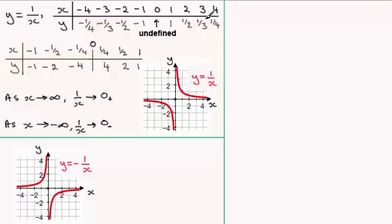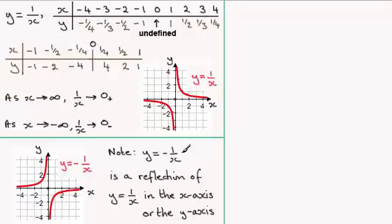I'll leave it up to you to check this out. Just draw yourself up a table, something like this, and plot the points and you'll see that you'll get a graph looking like this. And I hope you'll notice that this is related to this graph in as much as it's a reflection in the x-axis or a reflection in the y-axis. So what we've got then is that y equals minus 1 over x is a reflection of y equals 1 over x in the x-axis or the y-axis.